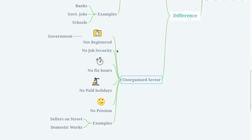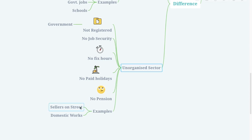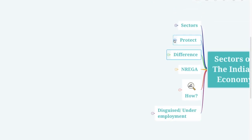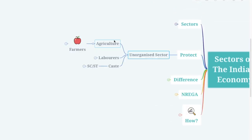The unorganized sector is not registered by the government. There is no job security, no fixed working hours, no paid holidays, and definitely no pension. Examples include street sellers and people doing domestic work.